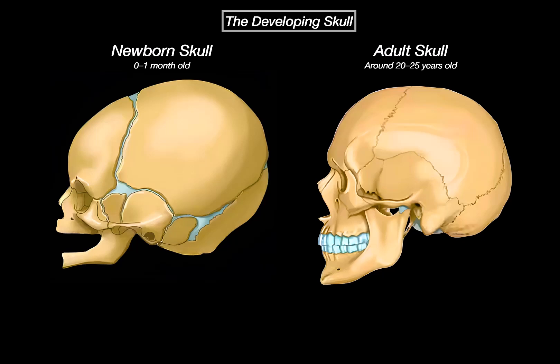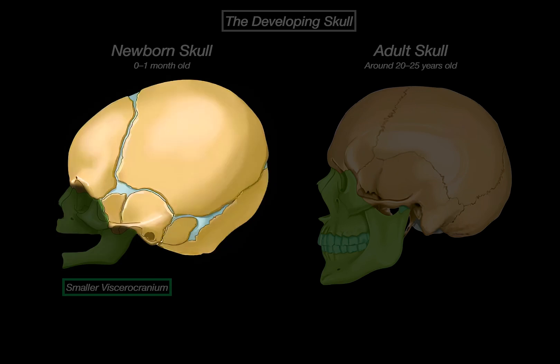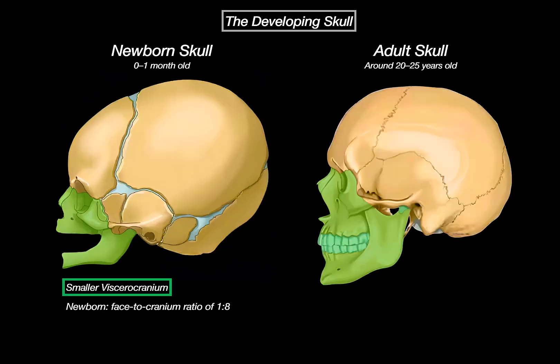Let's highlight the most important differences between a newborn skull and an adult skull. First, we can clearly see the size of the viscerocranium, which is the facial part of the skull. In newborns, the viscerocranium is much smaller in proportion to the neurocranium.